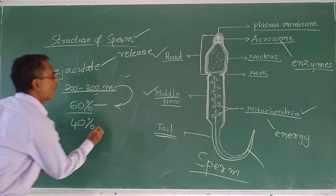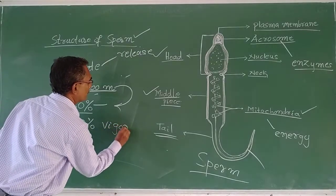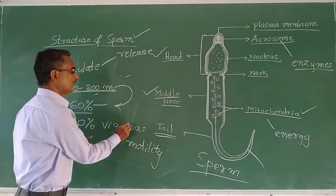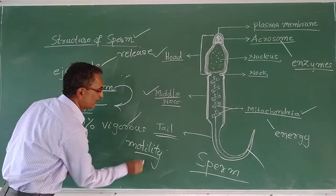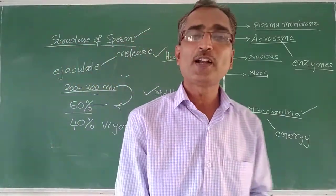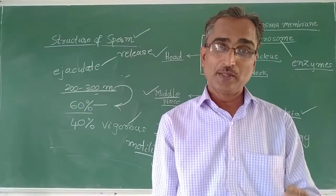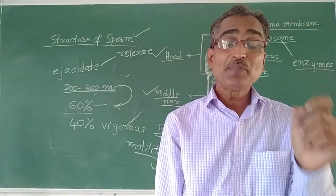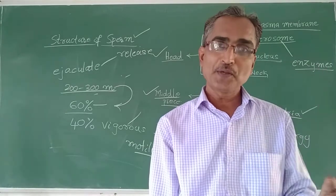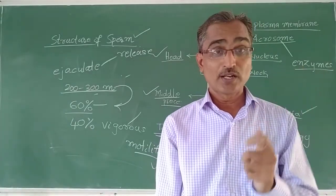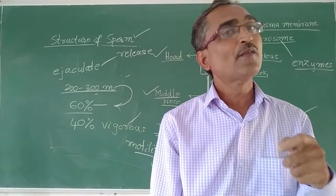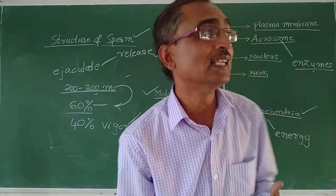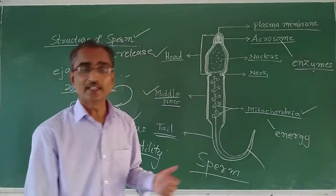Additionally, 40% of these sperms should have vigorous motility — vigorous means high speed, and motility means movement. So out of 200 to 300 million sperms produced per coitus, 60% should have normal shape and size and 40% should have vigorous motility, so that an individual will be considered fertile and able to father a child.